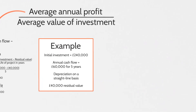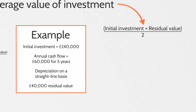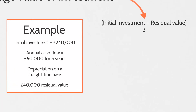Now we can calculate our average annual profit by taking our average annual cash flow of £60,000 and deducting our annual depreciation of £40,000, giving us £20,000 as our average annual profit. So returning to our main formula, we now know our average annual profit is £20,000. To work out the average value of investment, we use the formula: initial investment plus residual value divided by 2.